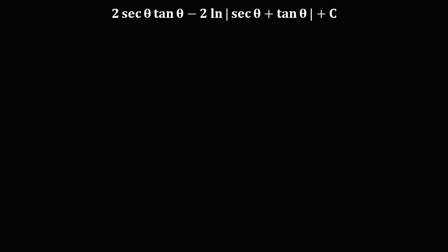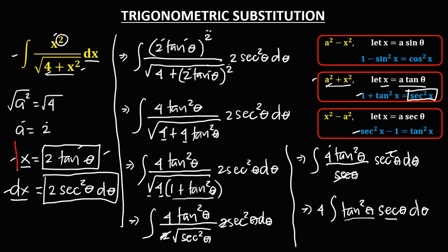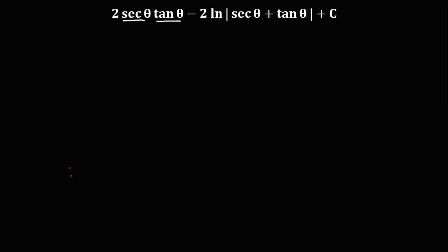From this equation we need to substitute values for secant theta and tangent theta. Since x equals 2 tangent theta, dividing both sides by 2 gives us tangent theta equals x over 2.